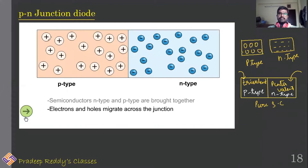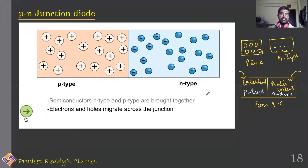This p-n junction diode has multiple uses in electronics — in almost all electronic devices we use this p-n junction diode. Its uses will be learned in the next section. First, let us learn how conduction takes place in a p-n junction diode.